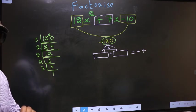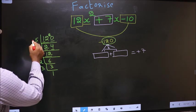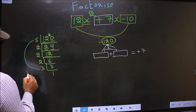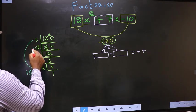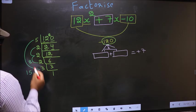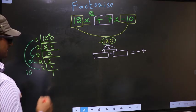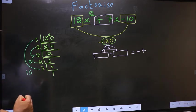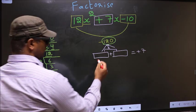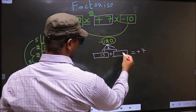Now the two numbers should be 5 into 3, which is 15, and the second number is 2 into 2, 4 into 2, which is 8. 15 minus 8 is 7, and 15 into 8 is 120. So here we write 15 and here 8. Next.